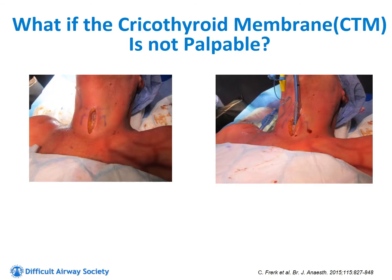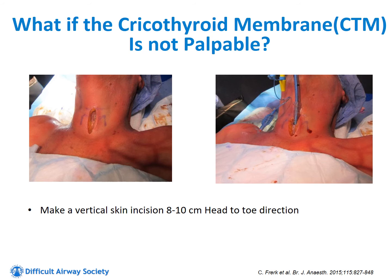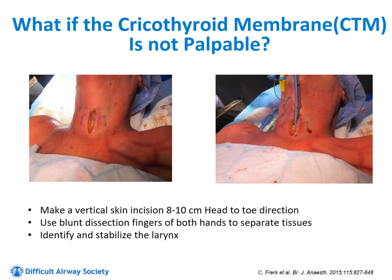If we can't palpate the cricothyroid membrane, as described in the preceding video, use a vertical incision going head to toe, 8 to 10 centimeters, and use your fingers to bluntly dissect away the tissue so you can clearly identify the cricothyroid membrane, stabilize the larynx, and then use the same technique. The only difference is that the vertical incision gives you better visualization to see your structures and know where to place your blade to access the cricothyroid membrane.